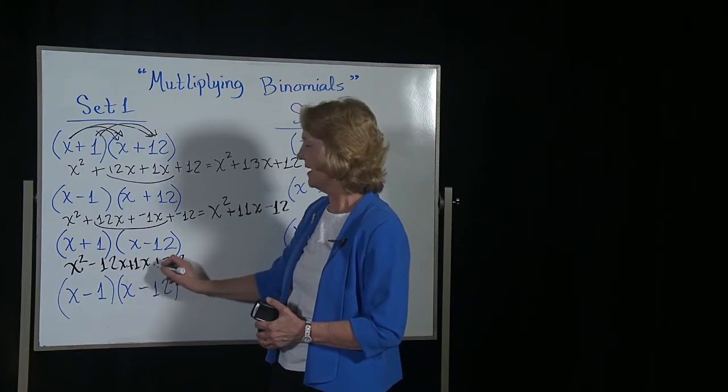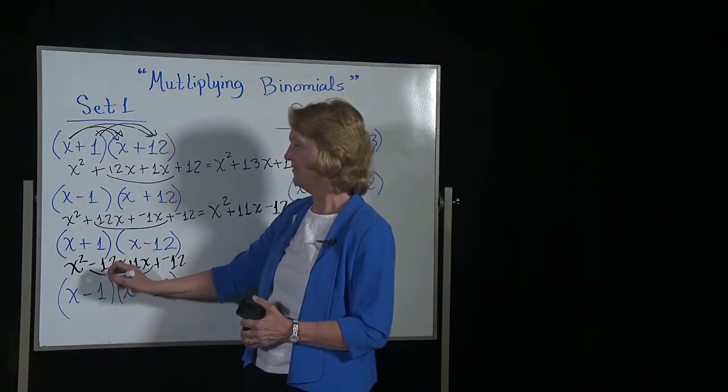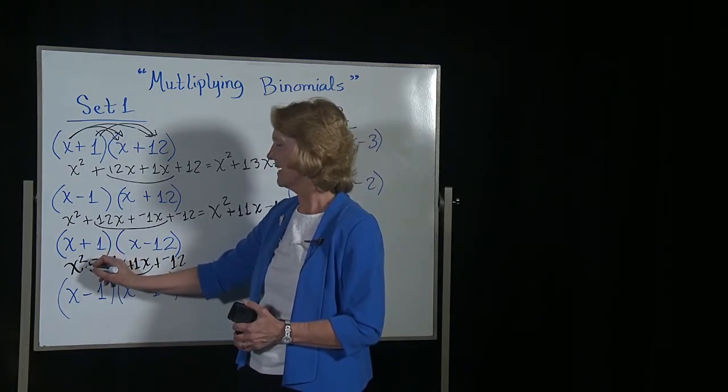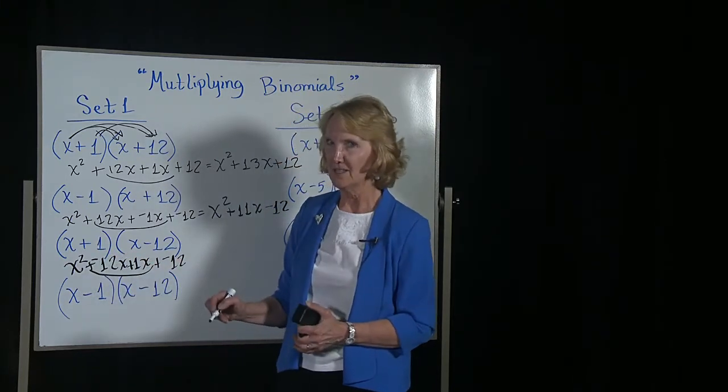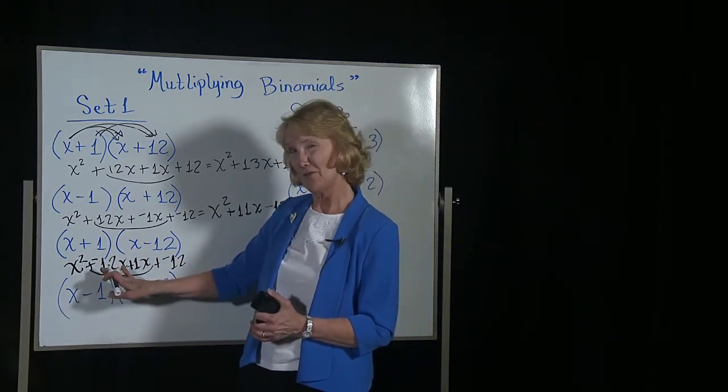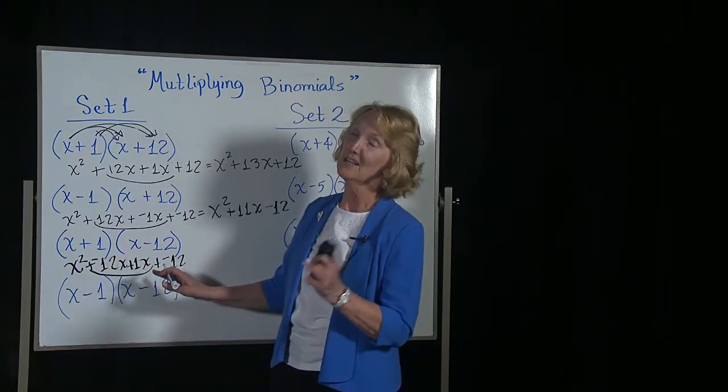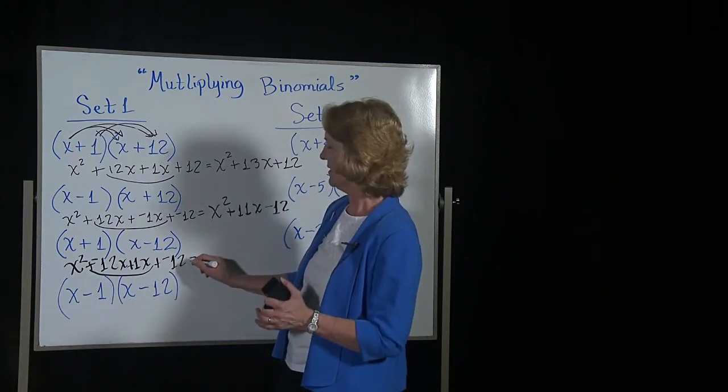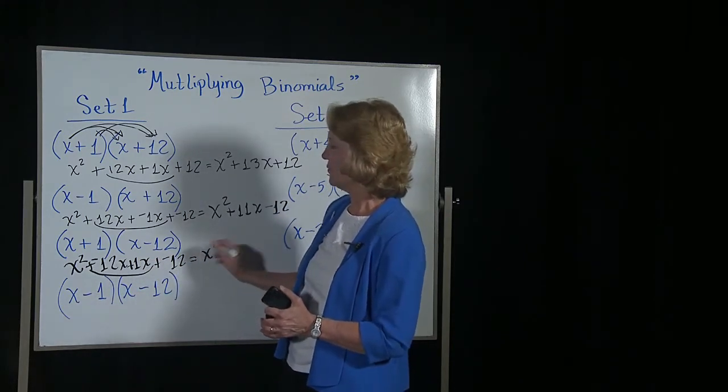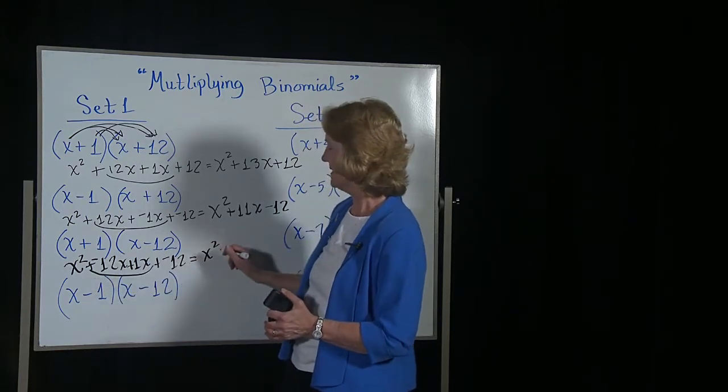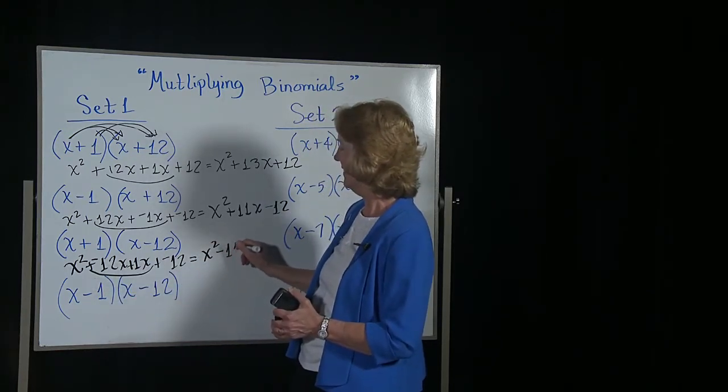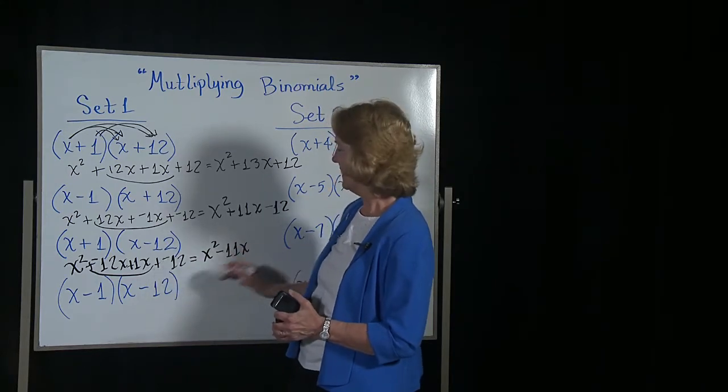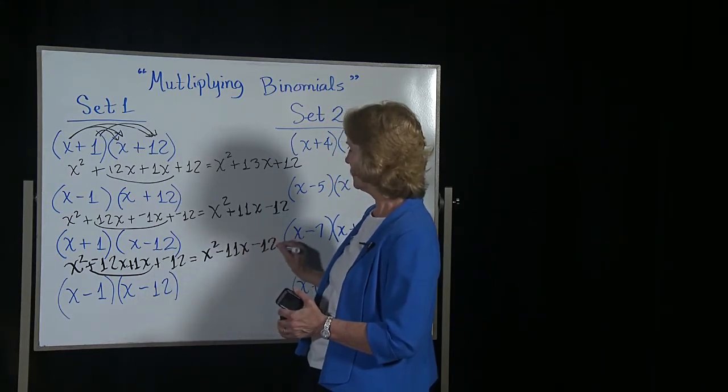Now we have like terms. We have a negative 12x and a positive 1x. If you're in debt $12 and you paid off 1, you'd still be in debt. So we're going to show that as x squared, negative 11x, and then minus 12.